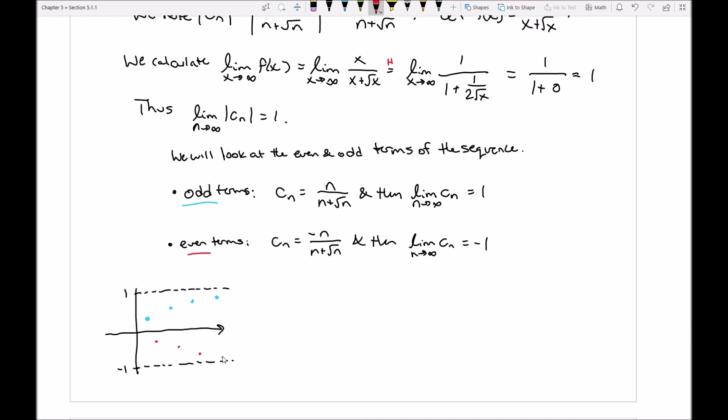Whereas the other terms of the sequence, the even number terms, like thing number 2, 4, 6, and 8, they're going to be moving towards negative 1. But of course, then this becomes pretty obvious to see that, well, where then do all of the numbers in the list go towards? Do all the numbers in the list head towards one single value? And the answer here is very clearly, no.